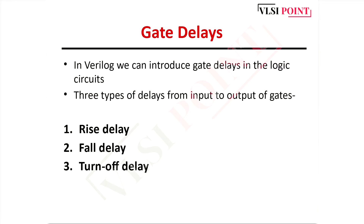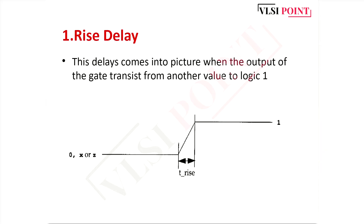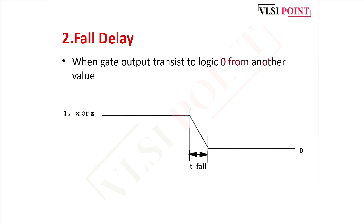Now we talk about gate delays. In Verilog we can introduce gate delays in the logic circuit. Three different types of delays are there: rise delay, fall delay, and turn-off delay. In rise delay, the gate output transits from 0, x, or z to 1. Whenever there is such a transition, the time duration required is called the rise delay. Similarly, in fall delay the transition is from 1, x, or z to 0, and that duration is called the fall delay.